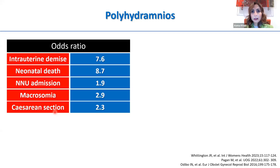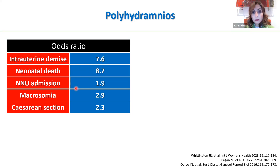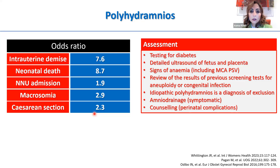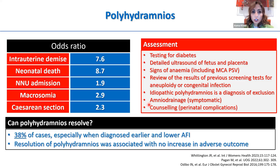Polyhydramnios is not a benign finding. It is associated with adverse outcomes — as shown here, the odds ratio for intrauterine demise is 7.6 (about 8 times higher), neonatal unit admission 8.7, twice the risk of NICU admission, macrosomia about 3 times higher, and caesarean section twice as high. If you find polyhydramnios, you need a detailed ultrasound scan looking for fetal and placental abnormalities, testing the mother for diabetes, looking for signs of anaemia via MCA peak systolic velocity, assessing the risk of aneuploidy or infection. Idiopathic polyhydramnios is a diagnosis of exclusion. Amnioreduction may be performed if symptomatic, and counselling about perinatal complications is important.